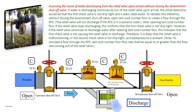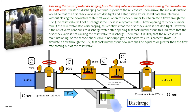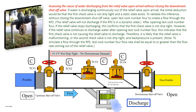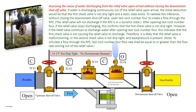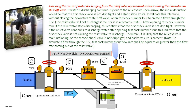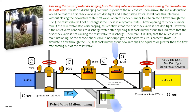Assessing the cause of water discharging from the relief valve upon arrival without closing the downstream shutoff valve. If water is discharging continuously out of the relief valve upon arrival, the initial deduction would be that the first check valve is not drip tight and a static state exists. To validate this inference without closing the downstream shutoff valve, open test cock number four to create a flow through the RPZ. The relief valve will not discharge if the RPZ is in a dynamic state. After opening test cock number four, if the relief valve stops discharging, this confirms that the first check valve is not drip tight. However, if the relief valve continues to discharge water after opening test cock number four, this indicates that the first check valve is not causing the relief valve to discharge. Therefore, it is likely that the relief valve is malfunctioning or the second check valve is not drip tight and back pressure is present.